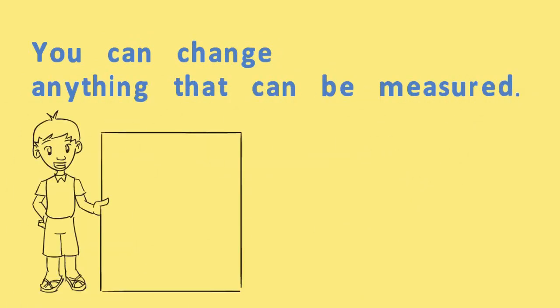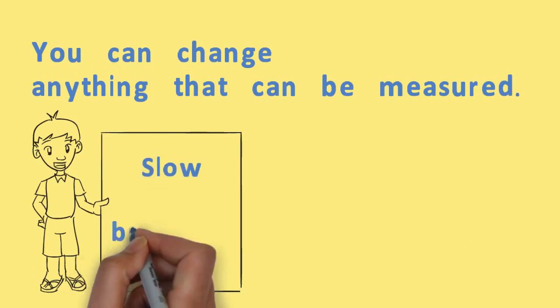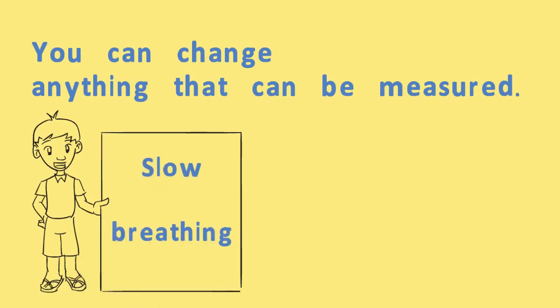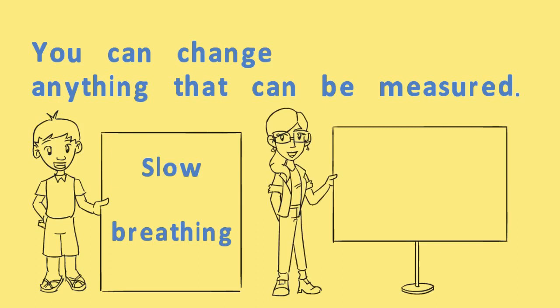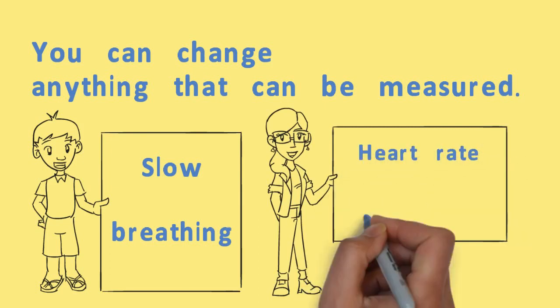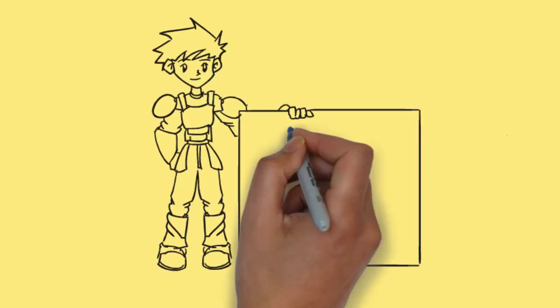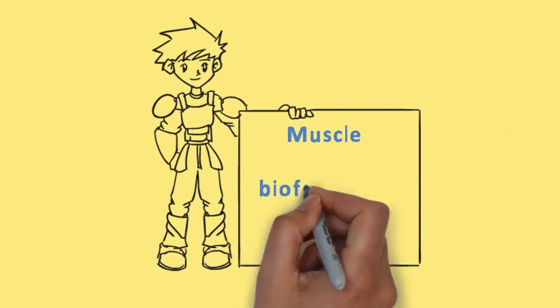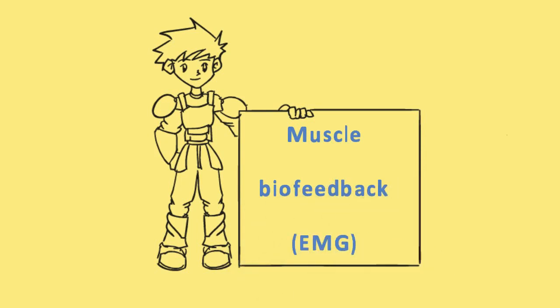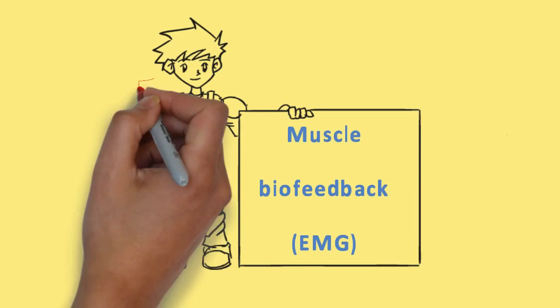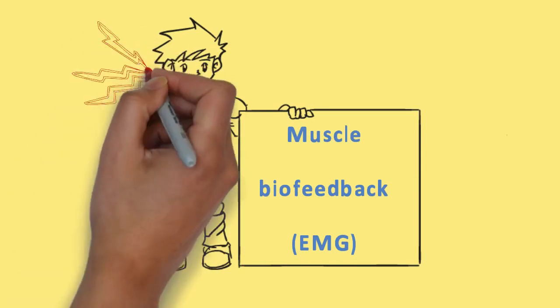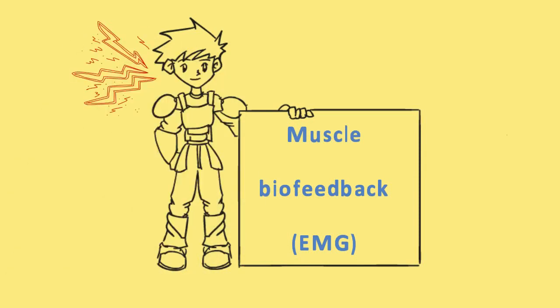The most common types of biofeedback are breathing, being able to slow your breathing down, something called heart rate variability that measures a heart rate measure that combines both heartbeat and breathing. There is muscle biofeedback, which is called EMG. You're measuring the electrical activity of muscle firing around the neck and the head.